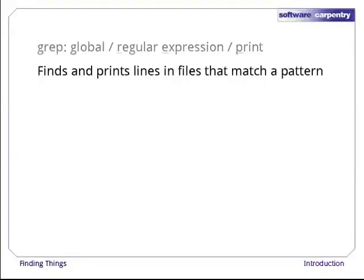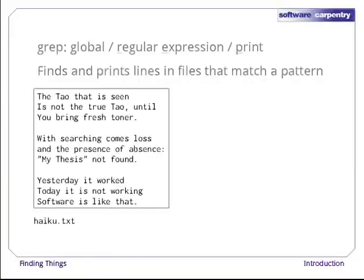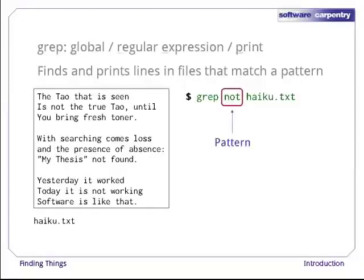Just as young people use Google as a verb, crusty old Unix programmers use the word grep. Grep is a contraction of global, regular expression, print, which was a common sequence of operations in early Unix text editors. What the grep program does is find and print lines in files that match a pattern. Here's the file we'll use for our examples — it contains three computer haikus taken from a competition that Salon Magazine ran in 1998.